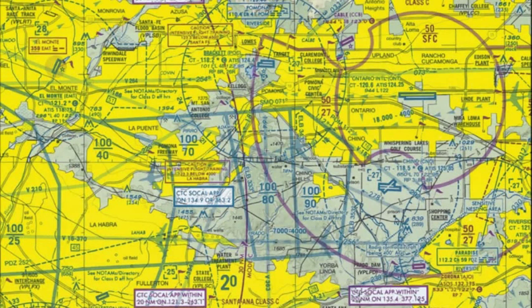Hi guys, welcome back. This is FSX404. I've decided to add another VOR lesson — a practicality lesson on how you would actually use a VOR in a Microsoft Flight Simulator Flight Planner. I'm going to do a basic flight from El Monte, KEMT, to Corona Airport, KAJO, using the Pomona VOR in between them.